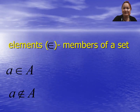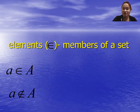We have what we call elements, or members of a set. If you have A, it is an element of set A. For example, the set A is the set of major island divisions in the Philippines — Luzon is an element of the major island division in the Philippines. If something is not an element, it is denoted by the epsilon symbol with a slash, meaning not an element.